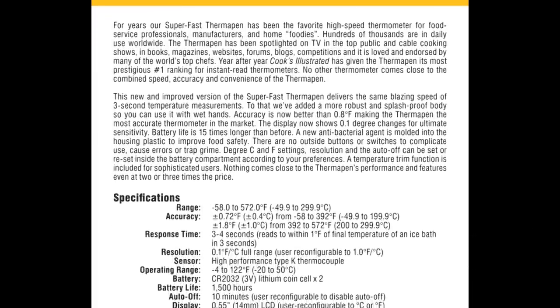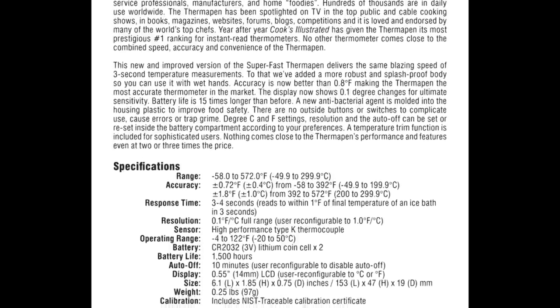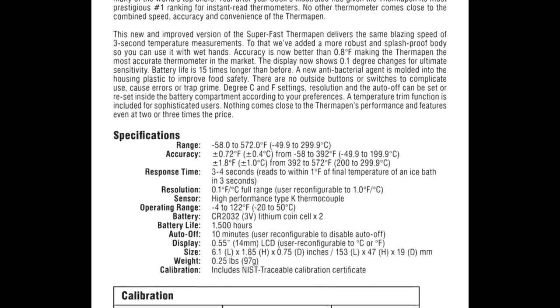That's why quality thermometer manufacturers publish accuracy specifications with their thermometers. This ThermaWorks Thermapen is accurate to plus or minus 0.7 degrees Fahrenheit from negative 58 all the way up to 392 degrees Fahrenheit.